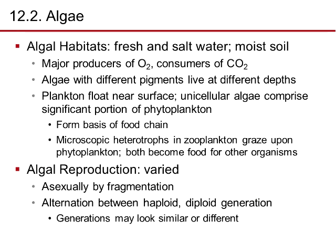Algae tend to live in fresh and salt water or moist soil. They are the major producers of oxygen and the major consumers of CO2, giving them great value to humans. Plankton float near the surface. Unicellular algae comprise a significant portion of the phytoplankton and form the basis of the food chain. Microscopic heterotrophs in zooplankton graze upon phytoplankton, and both become food for other organisms.